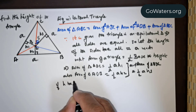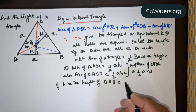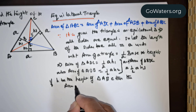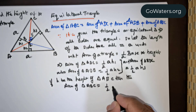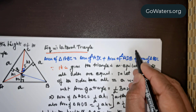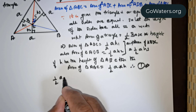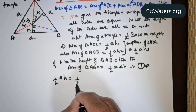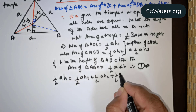If H is the height of triangle ABC, then the area of triangle ABC will be half times base times height, which is half times A times H. Setting this equal to the sum of the three sub-triangle areas, we get: half times A times H equals one-half A times H1 plus one-half A times H2 plus one-half A times H3.